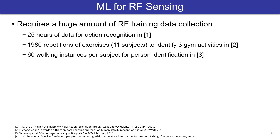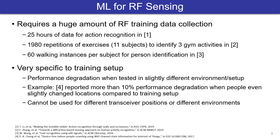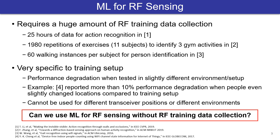Training a machine learning algorithm requires a lot of data. However, such a massive RF dataset is not readily available. As such, one needs to collect massive RF data for many different activities and configurations, which is not feasible. Also, due to the lack of such data, the trained model cannot generalize beyond the training setup. So, is there a way to use machine learning for RF sensing without collecting RF training data?